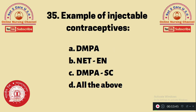Question 35: Examples of injectable contraceptives — A. DMPA, B. NET-EN, C. DMPA-SC, D. All of the above. The correct answer is option D — all of the above are examples of injectable contraceptives.